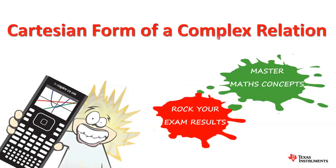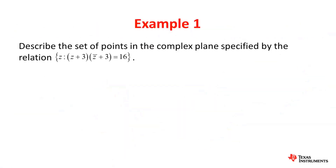In this video, we will be looking at the Cartesian form of a complex relation and how we can use the CX CAS to help us derive relations. So to start off, let's look at example one. Example one says: describe the set of points in the complex plane specified by the relation — the set of all points z such that the product of z plus 3 and the conjugate of z plus 3 is equal to 16.